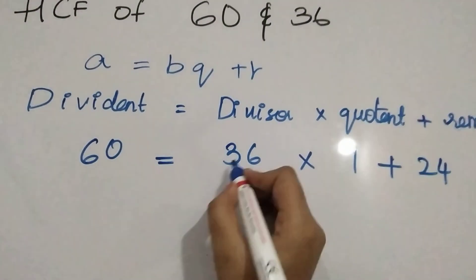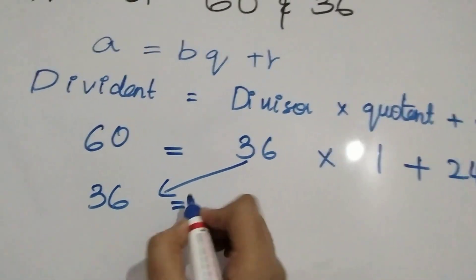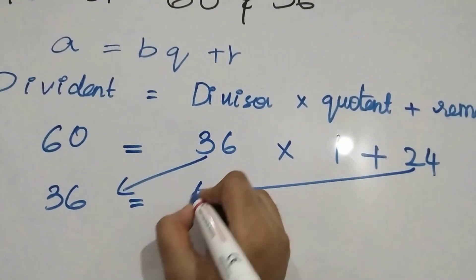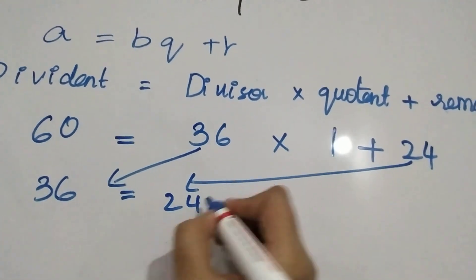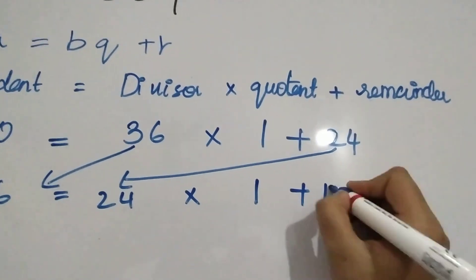So 36 becomes the next dividend and 24 becomes the next divisor and it goes one time and 12 is the remainder.